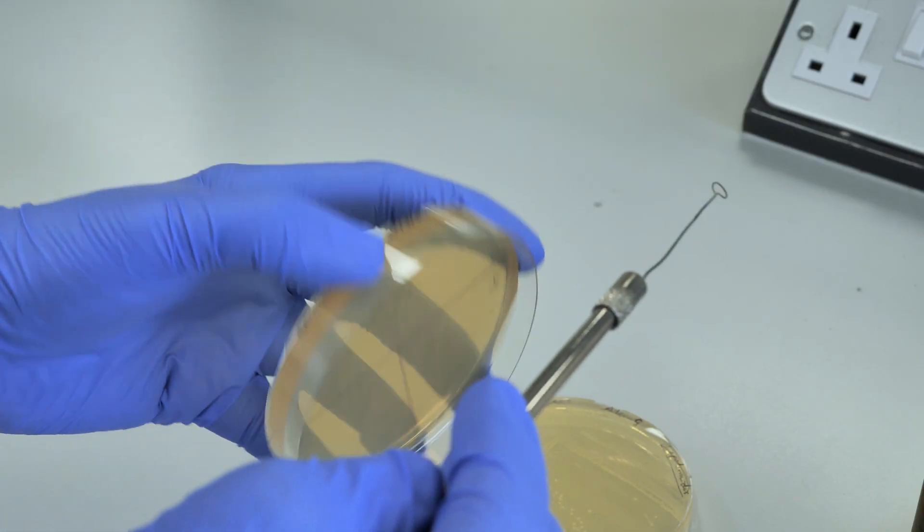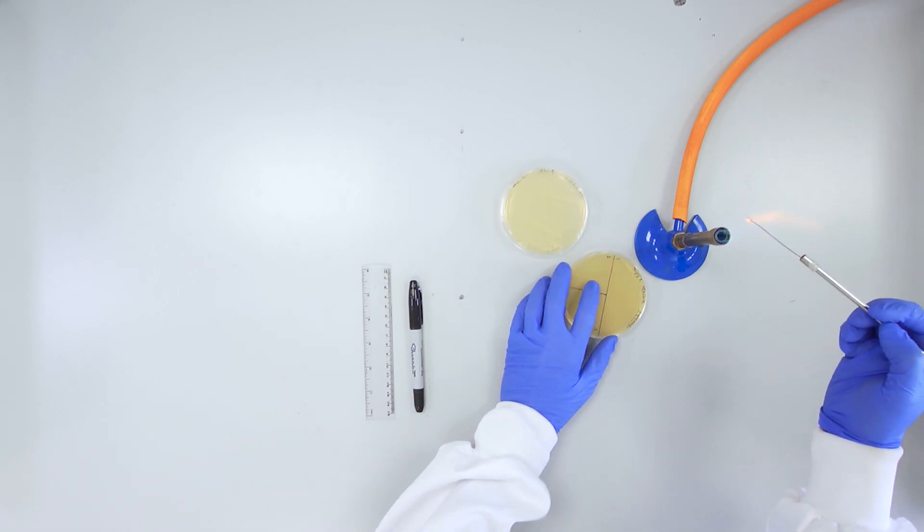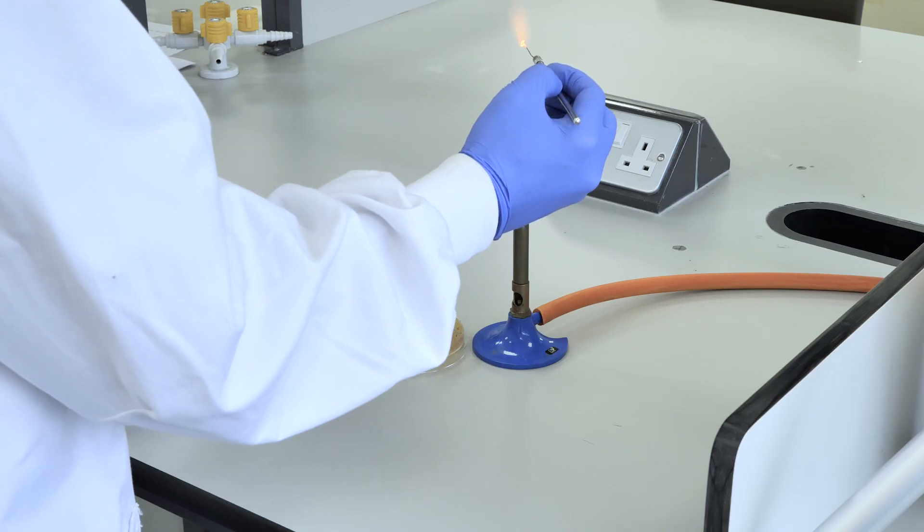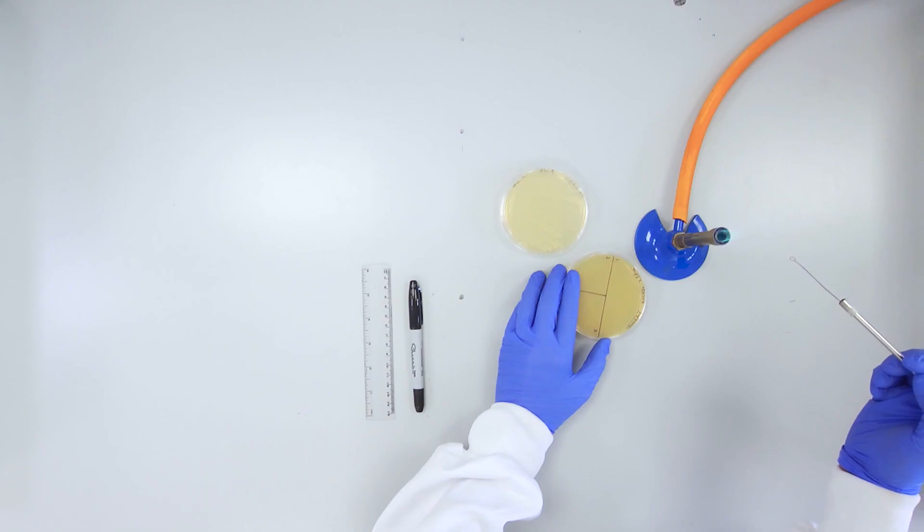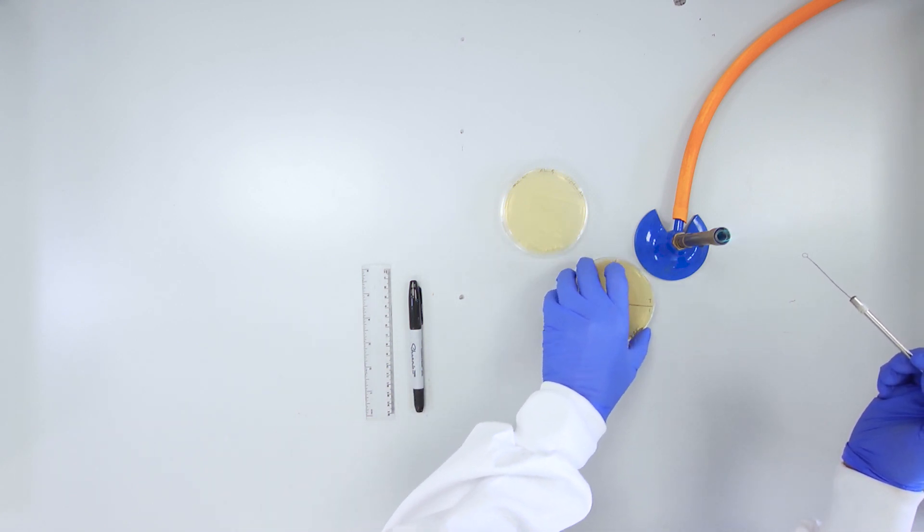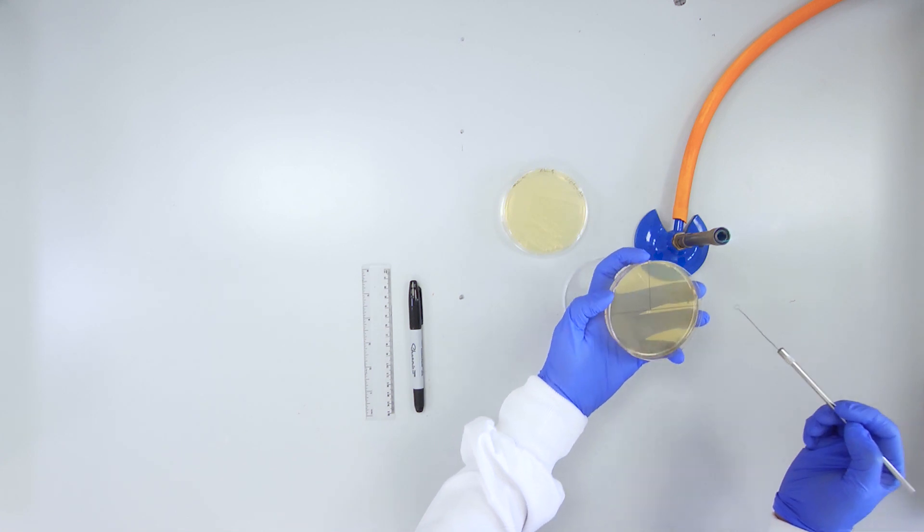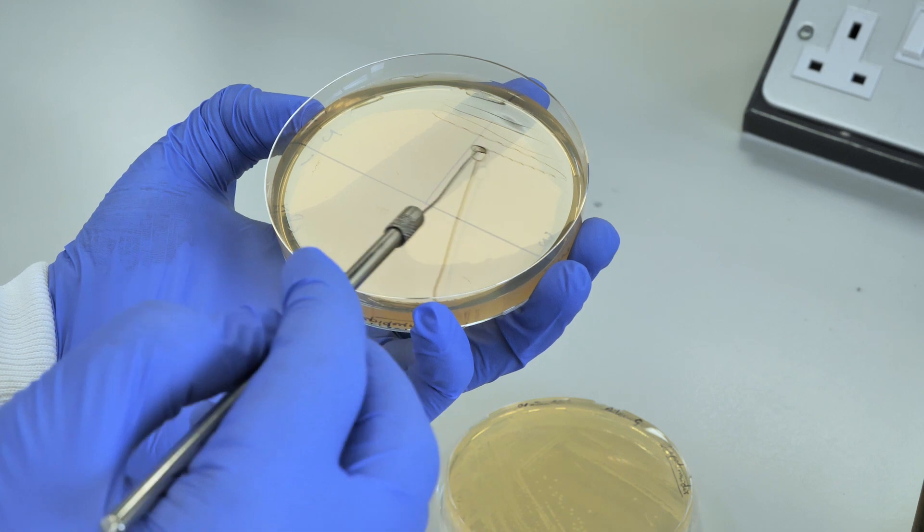Again, replace the plate immediately afterwards. Re-sterilize your loop and allow to cool for 20 seconds. Rotate your TSA plate a further 90 degrees to the right and recharge your loop by going back into section 2 and streaking into section 3.